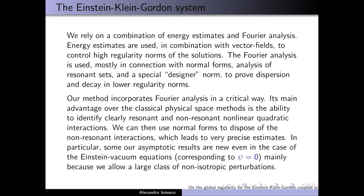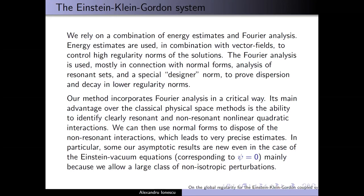One key advantage in using the Fourier space — and we've also applied the same method to water waves and various fluid models — is that we are able to identify very clearly what's resonant and what's not resonant. All of the binary interactions are either resonant or non-resonant, and using the Fourier analysis we can identify them clearly. We're also able to do normal forms — integration by parts in time — so we don't need to have a lot of decay. What's more important is how the decay is combined with the position of the resonances, and this leads to very precise estimates.